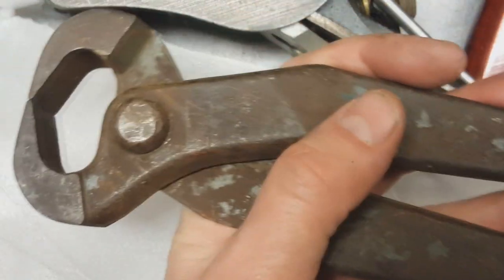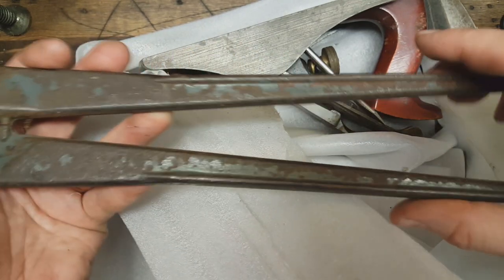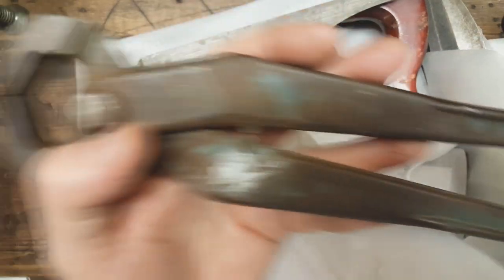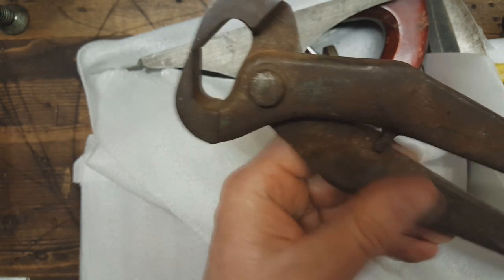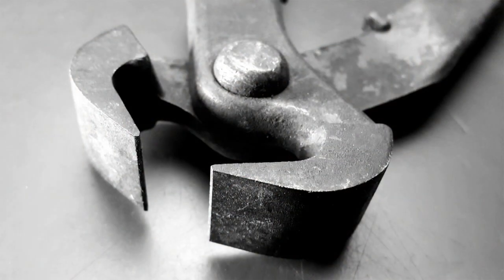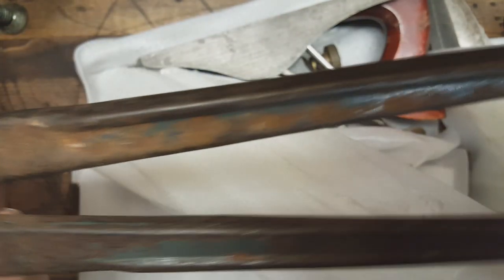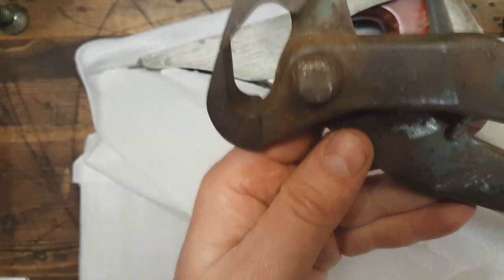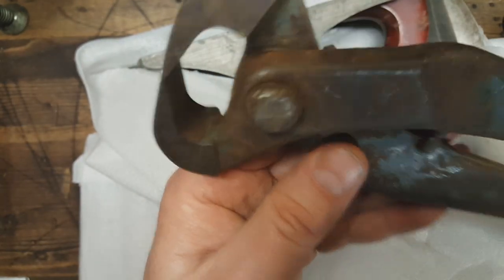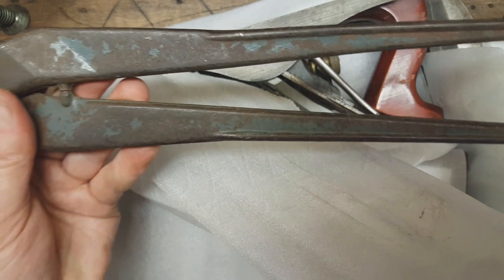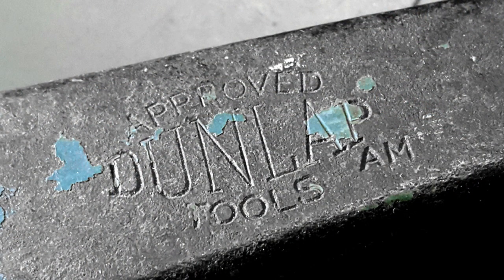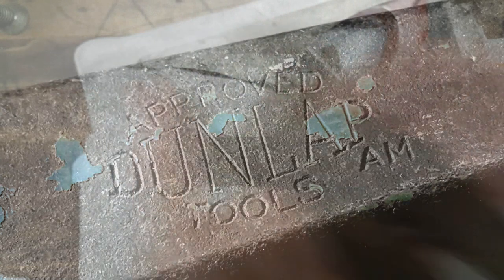Let's see. Missing stuff here. All right. We've got some nippers. Good size nippers here. Very cool. Let's see if I can find a maker's mark on here. Might be underneath the rust. Not seeing anything right now. Those are super cool, though. Awesome.